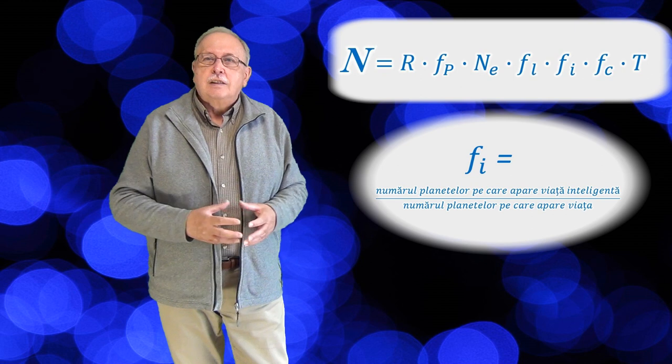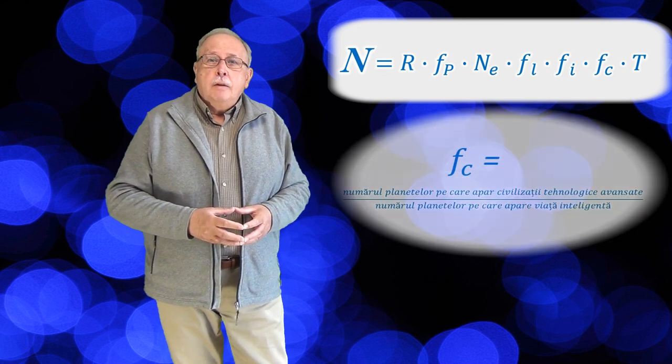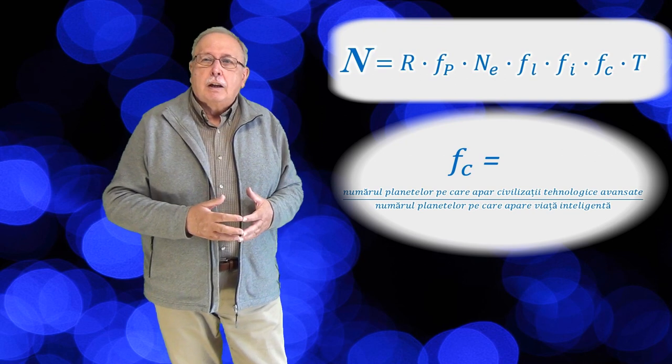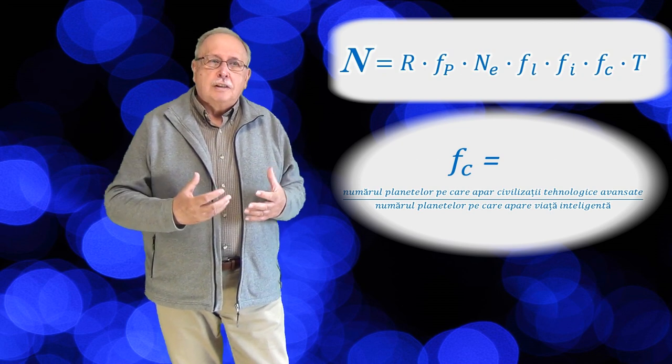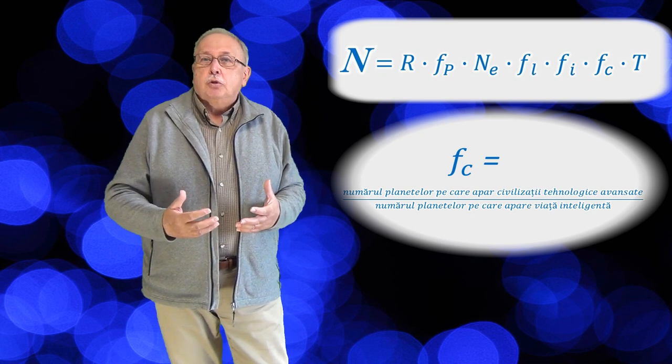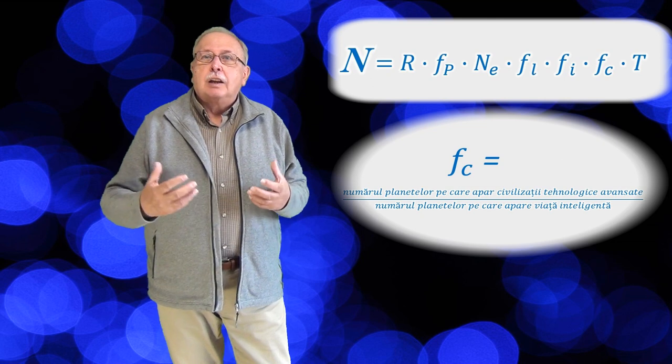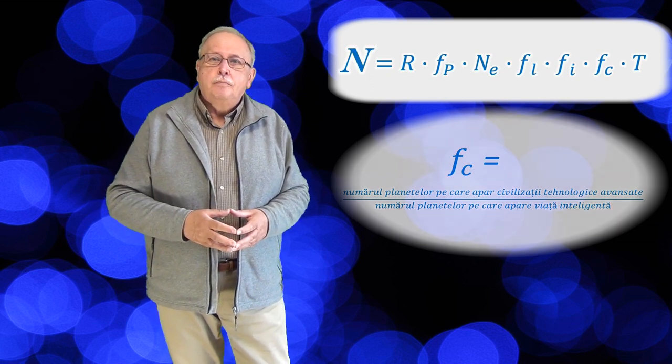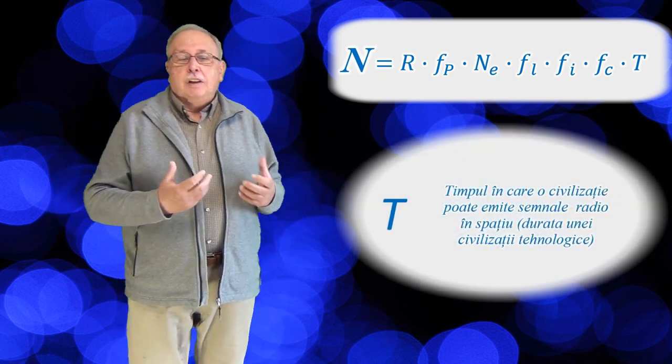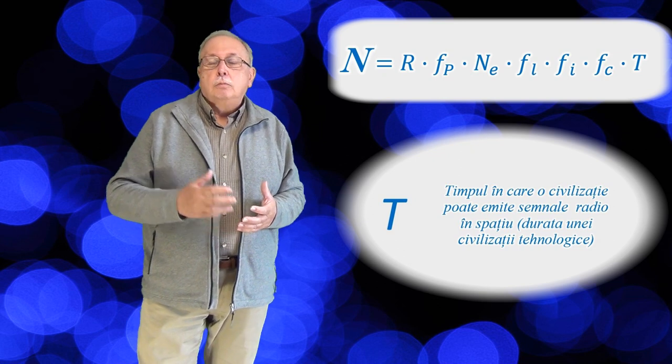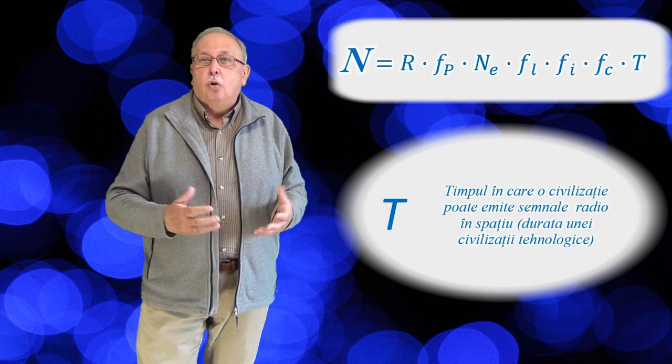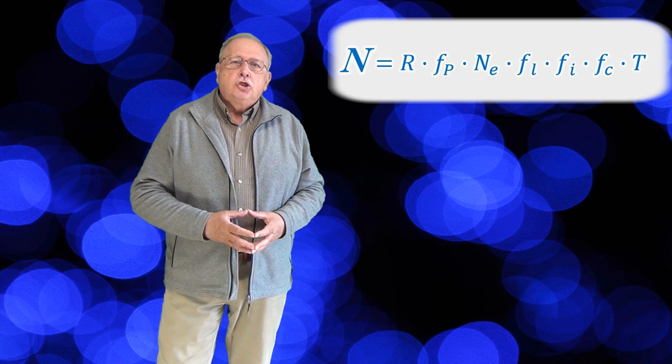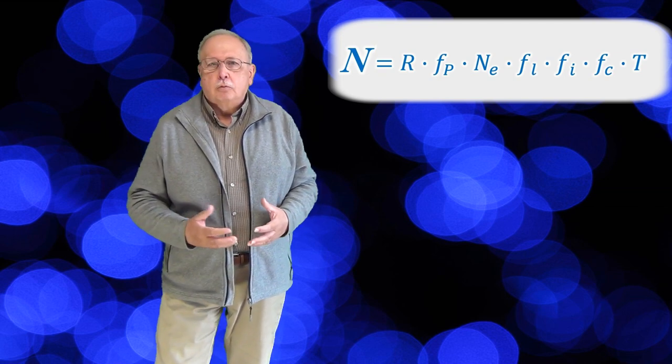Trebuie să apară civilizații care se pot dezvolta. FC fracțiunea din planetele pe care apar civilizații și planetele pe care civilizațiile respective ajung la o dezvoltare tehnologică suficientă pentru a putea emite și recepționa semnale radio în și din spațiu. Iar T mare este timpul în care civilizațiile capabile să comunice cu civilizații extraterestre pot face acest lucru. Deci este un timp, o durată.